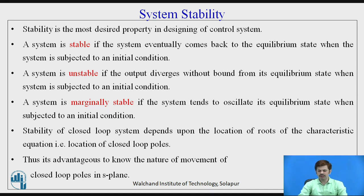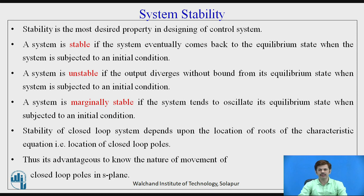System stability: whenever a control system is designed, the inherent capability should be that the system is stable. Stability is the desired property of any designed control system. A system is said to be stable if it eventually comes back to the equilibrium state when subjected to initial conditions. A system is unstable if the output deviates without bound from its equilibrium state. A system is said to be marginally stable if it tends to oscillate in its equilibrium state when subjected to initial conditions. In control systems, we define stability depending upon where the roots lie.